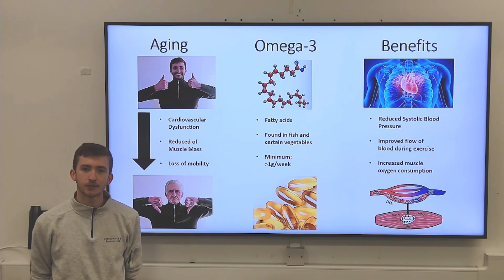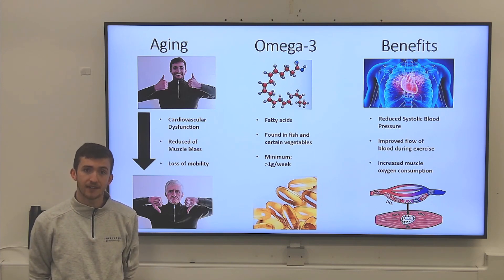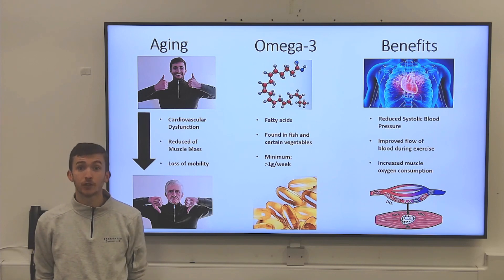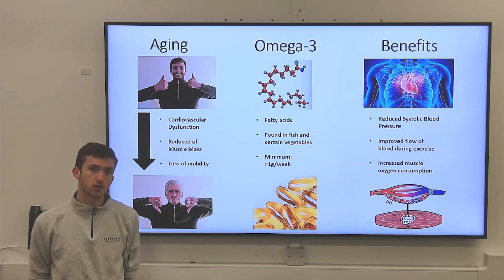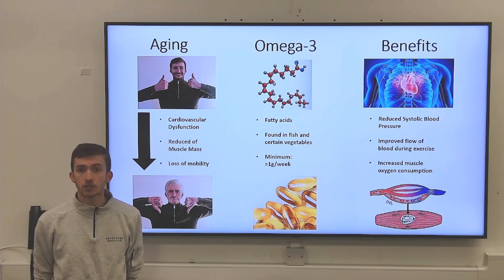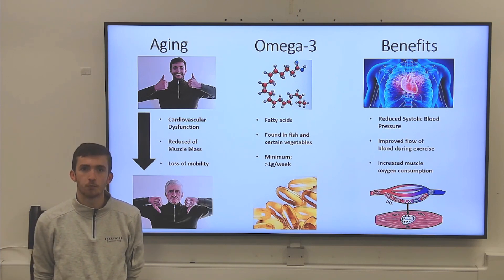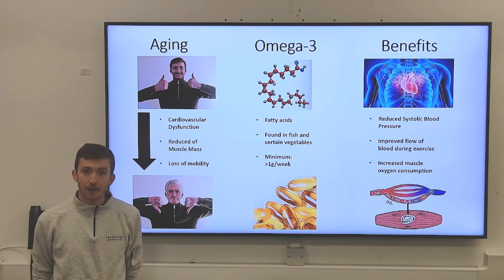Our research has taken adults from Dundee over the age of 50 years old and supplemented them with high dosages of omega-3 fatty acids for a period of six months. In this time, we found that older adults taking these supplements have a lower resting systolic blood pressure, indicating that they are more protected from cardiovascular disease. We've also found that during sub-maximal exercise, they have a better cardiac output, meaning that they're pumping more blood around the body during exercise, suggesting that more blood is getting to the active skeletal muscle. We've also found that at rest, there's a better perfusion of oxygen into resting skeletal muscle.